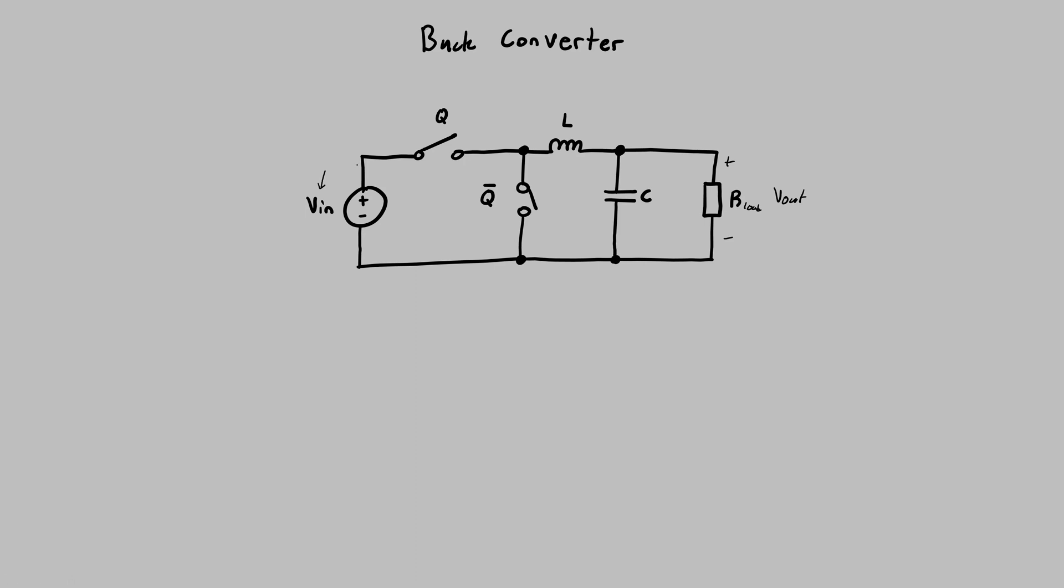So how this operates is that first the top switch closes, which sends a current through the inductor, which charges the magnetic field up in this inductor. And the current goes through the resistor and then charges up the capacitor as well. And then it goes back to the voltage source through the ground.